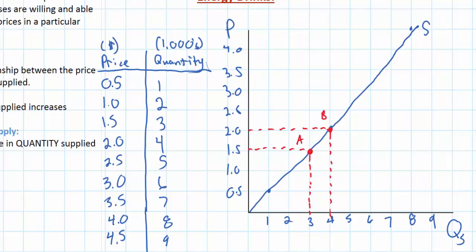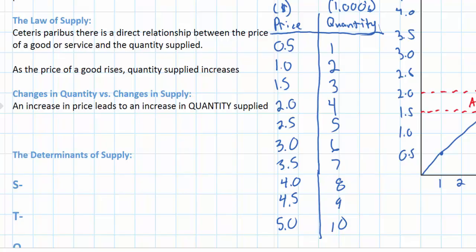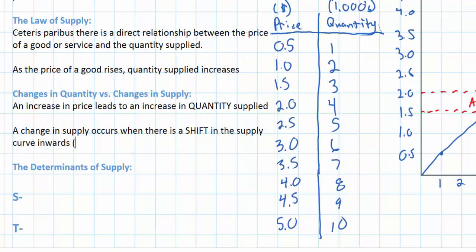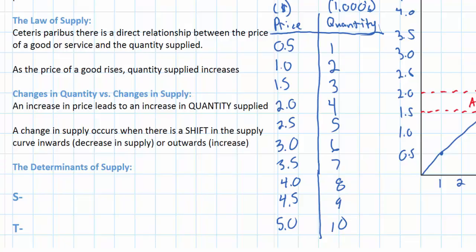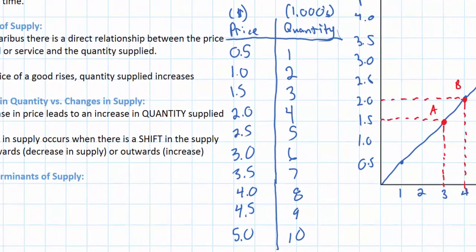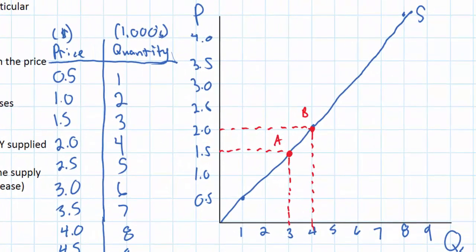So what does a change in supply refer to? A change in supply occurs when the entire supply of a good shifts either inwards or outwards. We'll talk in a moment about the things that can cause a shift in the supply curve. An inward shift corresponds with a decrease in supply, while an outward shift corresponds with an increase in supply. A shift to the left from S to S1 represents a decrease in supply.